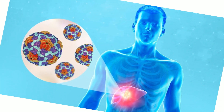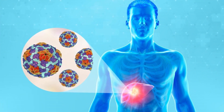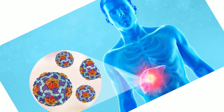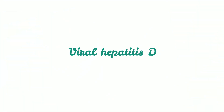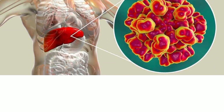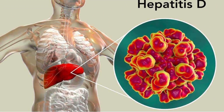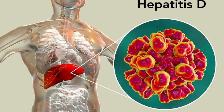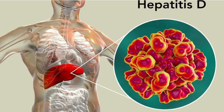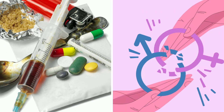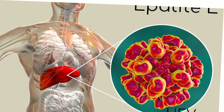Hepatitis C infection cannot be prevented by a vaccination, and it is possible to contract hepatitis C more than once. What about hepatitis D? Hepatitis D virus can be acquired either as a super-infection in persons who already have hepatitis B, or as a co-infection occurring concurrently with the hepatitis B virus. Hepatitis D can be acquired through risky sexual encounters, sharing injecting supplies, or other behaviors where blood of an infected person contacts your blood.